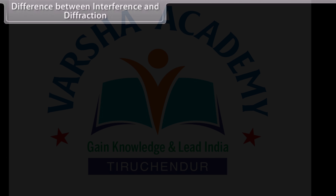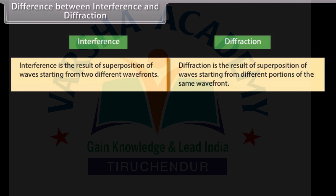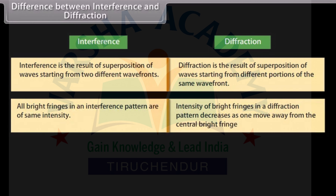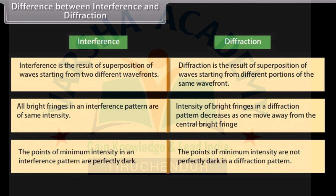Difference between interference and diffraction. Interference is the result of superposition of waves starting from two different wavefronts, whereas diffraction is the result of superposition of waves starting from different portions of the same wavefront. All bright fringes in an interference pattern are of same intensity, whereas intensity of brightness in a diffraction pattern decreases as one moves away from the central bright fringe. The points of minimum intensity in an interference pattern are perfectly dark, whereas the points of minimum intensity are not perfectly dark in a diffraction pattern.